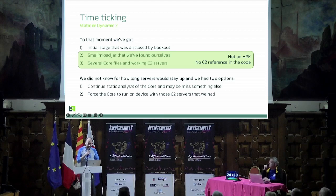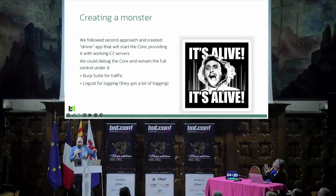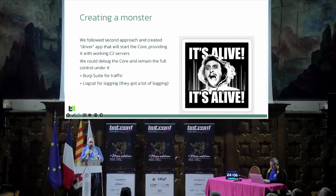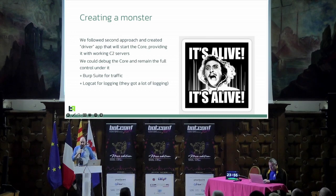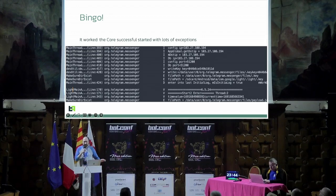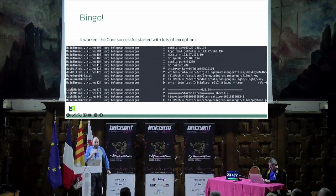I followed the second approach. I created a Frankenstein application that does almost the same things as smallmload.jar — it will unpack and store the core provided by the C2 and start it up. The benefit is that I remain in full control of that monster: I can use traffic interception, debugging, stop the process any time. It ran perfectly — with lots of exceptions and errors of course, because of missing permissions — but at minimum we had the internet permission.